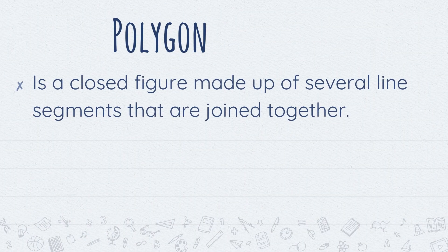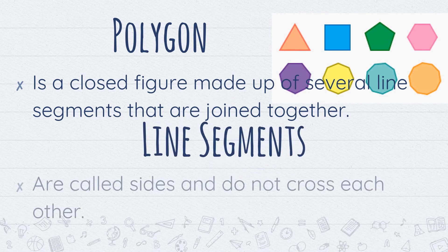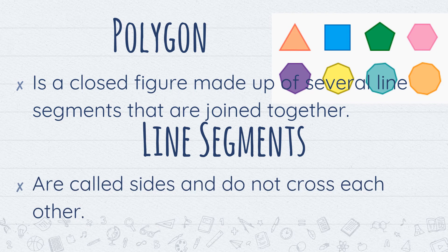Ano nga ba ang isang polygon? Polygon is a closed figure made up of several line segments that are joined together. Ito ang mga examples ng polygon. Line segments are called sides and do not cross each other.